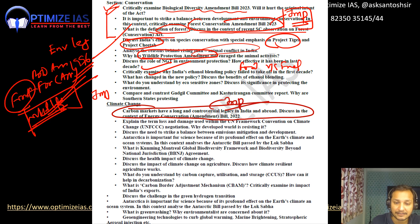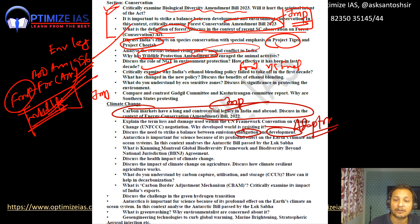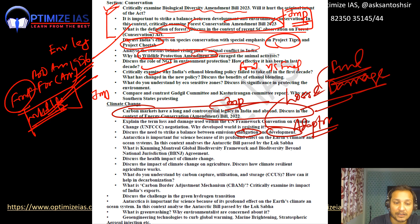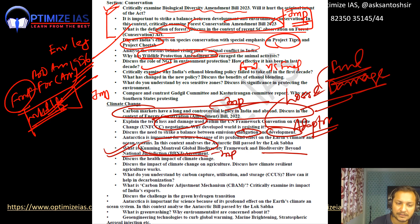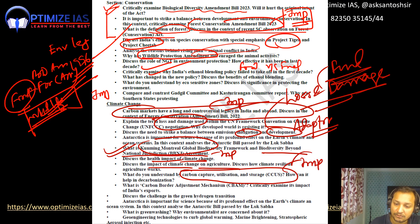They can also ask about balancing mitigation versus development, and mitigation versus adaptation. Another important topic is the Loss and Damage Fund — what are the issues related to it? This is also a probable topic. Next, the Kunming-Montreal Biodiversity Framework — just go through it. Also the Biodiversity Beyond National Jurisdiction (BBNJ) Agreement — these two new biodiversity agreements are important. They can ask about the impact of climate change on health, and the impact of climate change on agriculture. Carbon Capture, Utilization, and Storage (CCUS) — what are the issues, and is it really effective in controlling climate change?